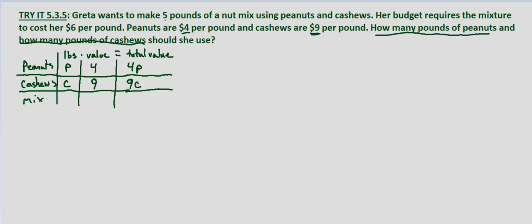She wants 5 pounds of nut mix total, so the total number of pounds is 5. The value per pound must be $6 per pound, and therefore the total value is $30 — that's $6 per pound times 5 pounds.